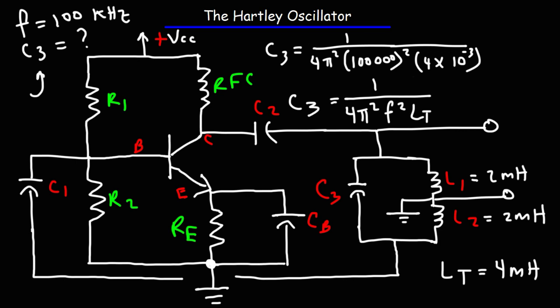So go ahead and plug this into your calculator. Don't forget to enclose all of this in parentheses. So the value that I got is 6.33 times 10 to the minus 10 farads. I'm going to divide that by 1 times 10 to the minus 9 to convert it to nanofarads.